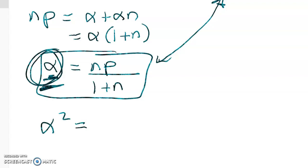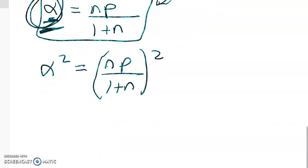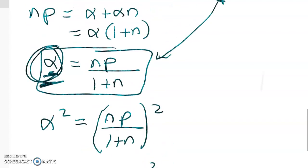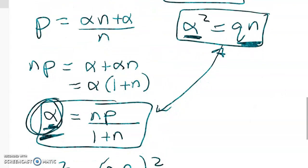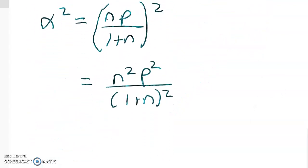I get alpha squared is equal to n squared p squared over 1 plus n squared. From up here, alpha squared is equal to qn. So I can set those two things equal to each other.